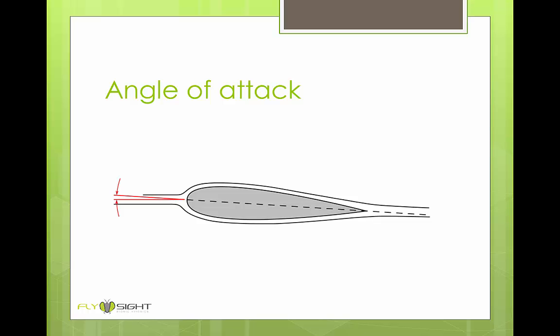The angle of attack is the angle between the relative wind and the chord line of the airfoil. That's the dotted line in this diagram going from the leading edge to the trailing edge.